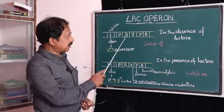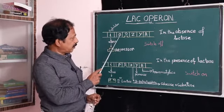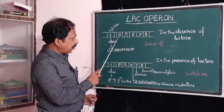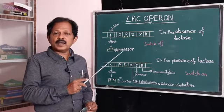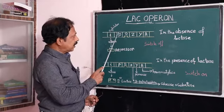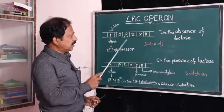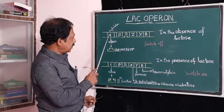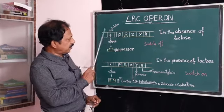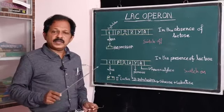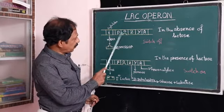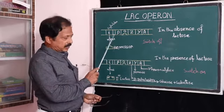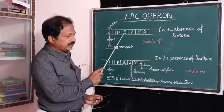Adjacent to the structural genes are the operator, promoter, and regulator gene, each with its own function. The promoter is the region where RNA polymerase binds and transcription is initiated. The operator is the region where the repressor binds. The regulator gene, represented by the I gene, produces the repressor. Once the repressor binds to the operator, RNA polymerase cannot bind to the promoter, so transcription will be inhibited.